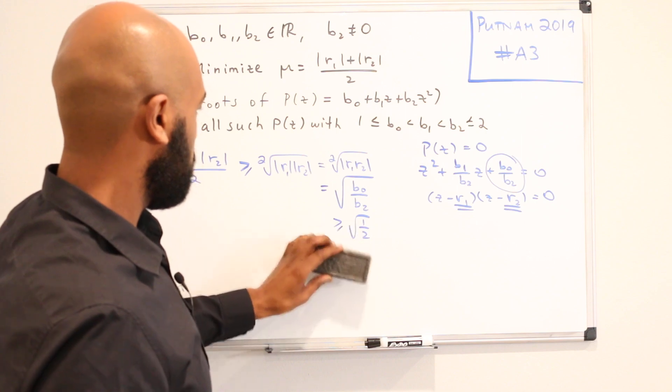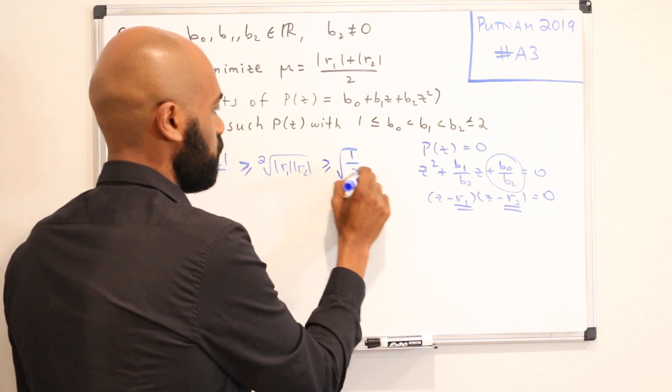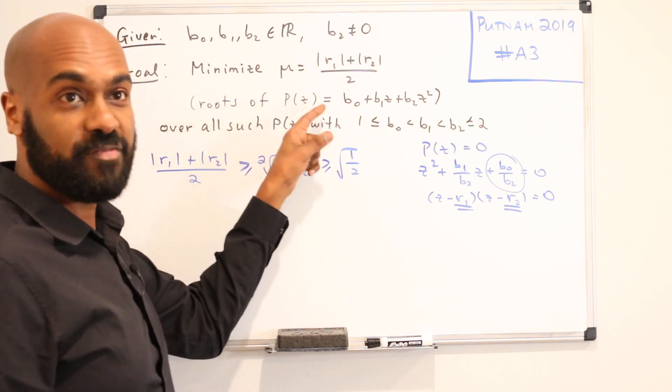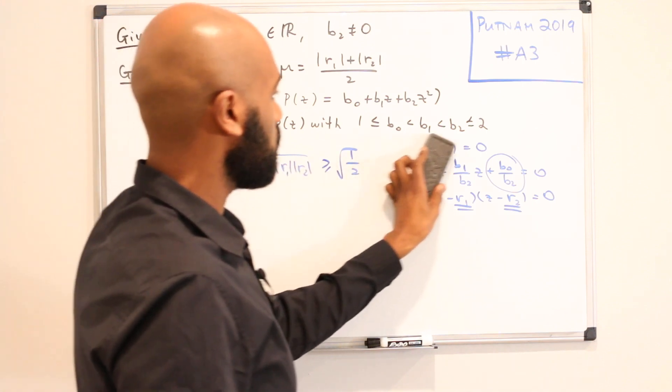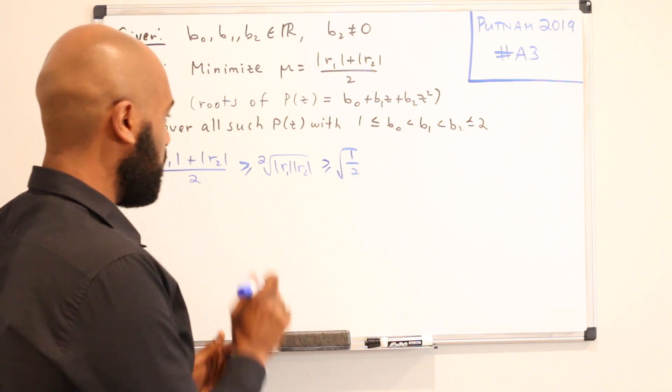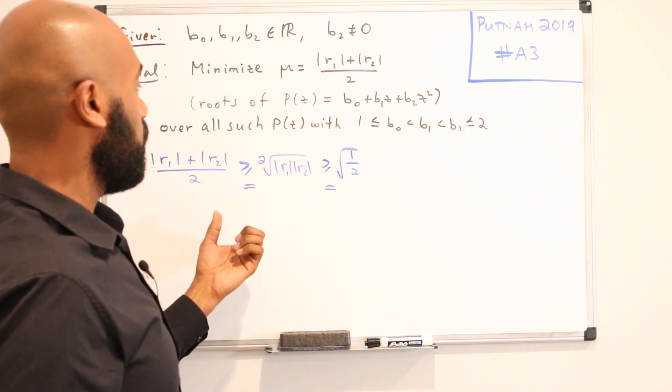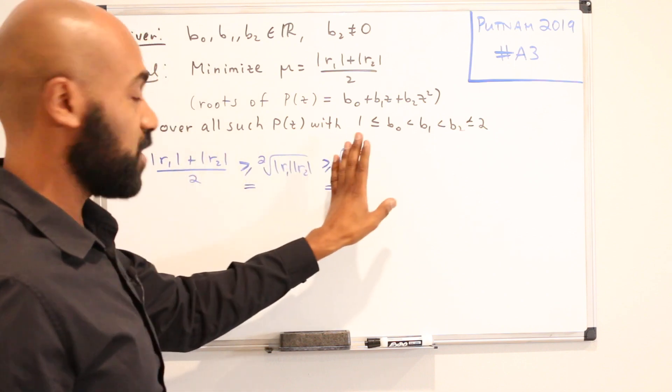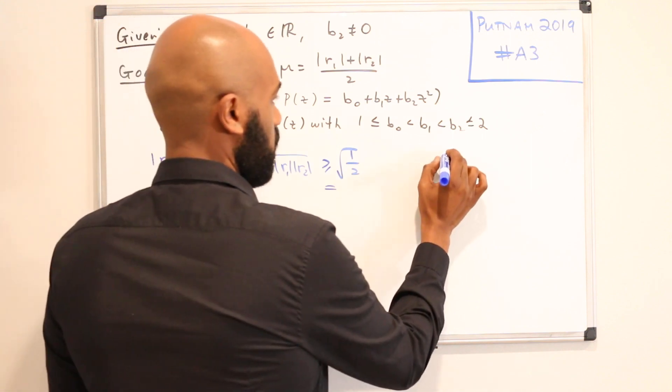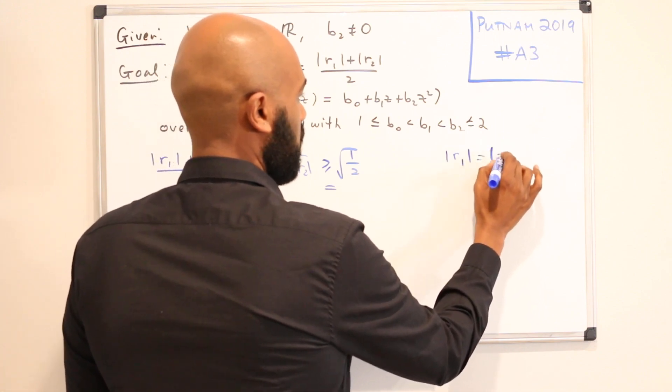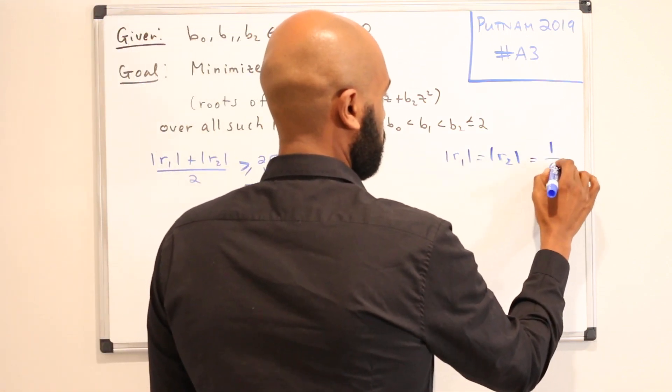We know from the work we did that this quantity here is at least 1 over root, the square root of 1 over 2. So no matter what polynomial we pick in this family of polynomials, this expression here is at least the square root of 1 over 2. So if we can find a polynomial where we have equality in each of these situations, then that polynomial will minimize this function because we know this is a lower bound for sure, and that lower bound will be achieved. We're looking for a polynomial where the modulus of r1 and the modulus of r2 are equal, and their product is 1 half. So in other words, they're both 1 over the square root of 2 in modulus.